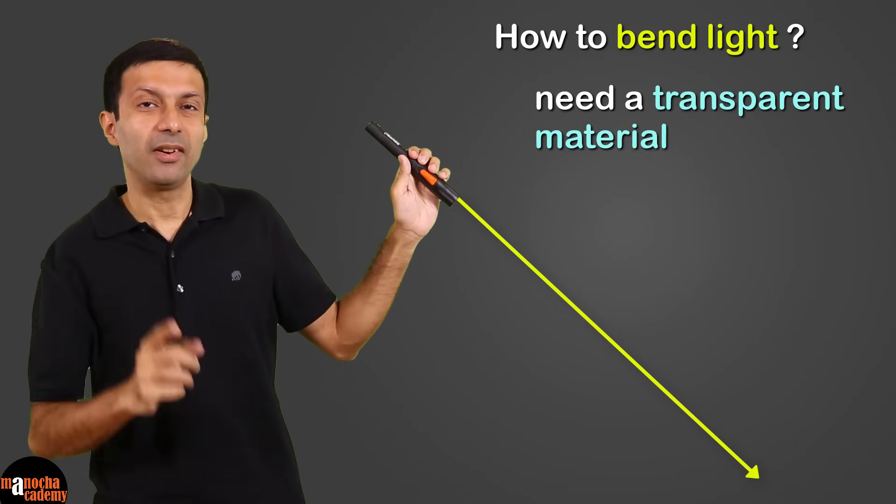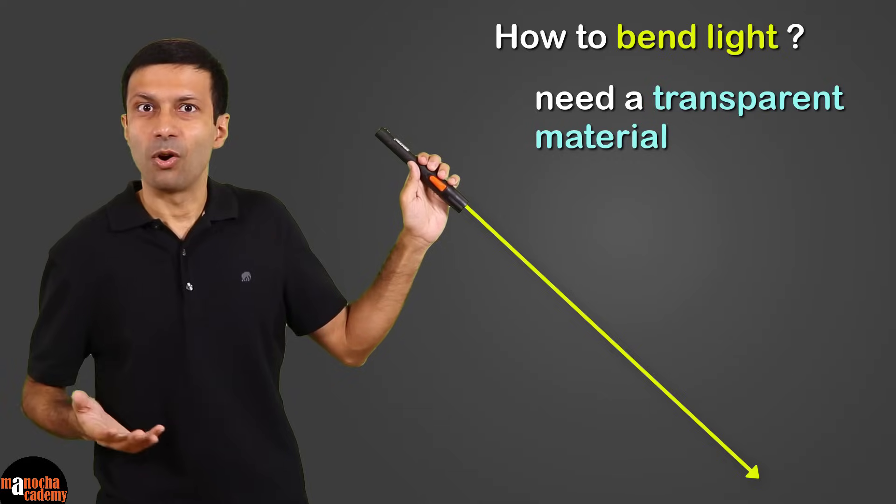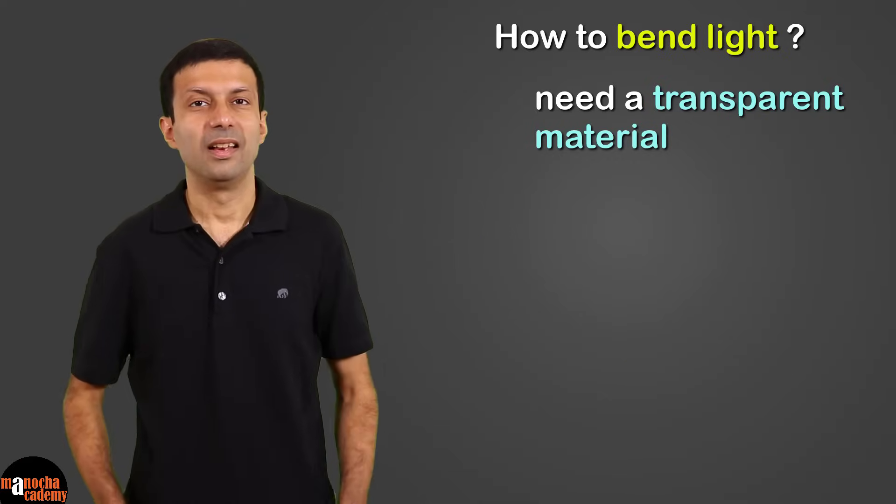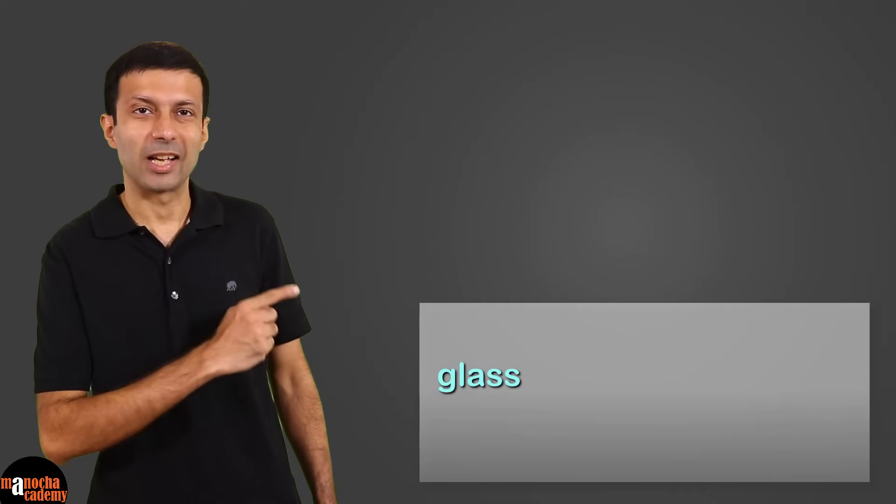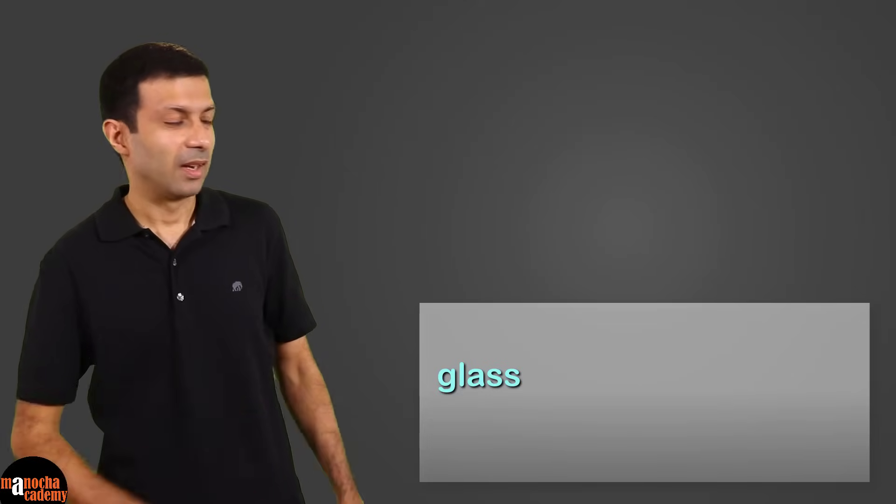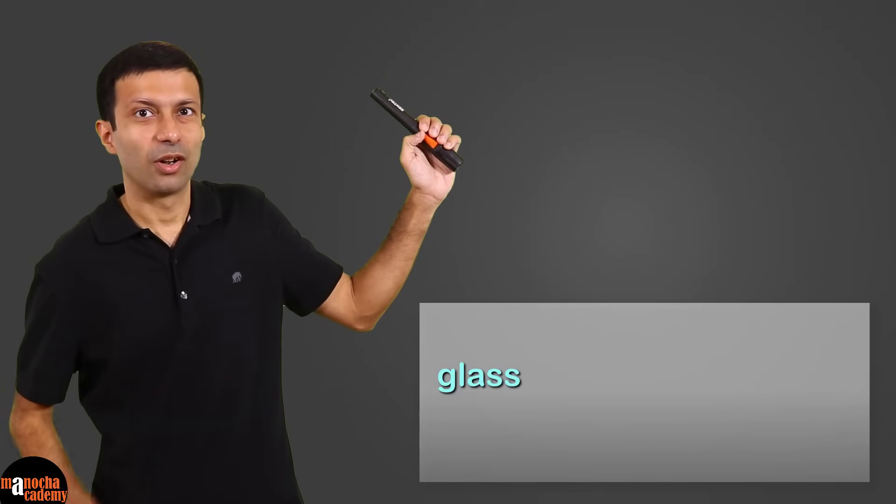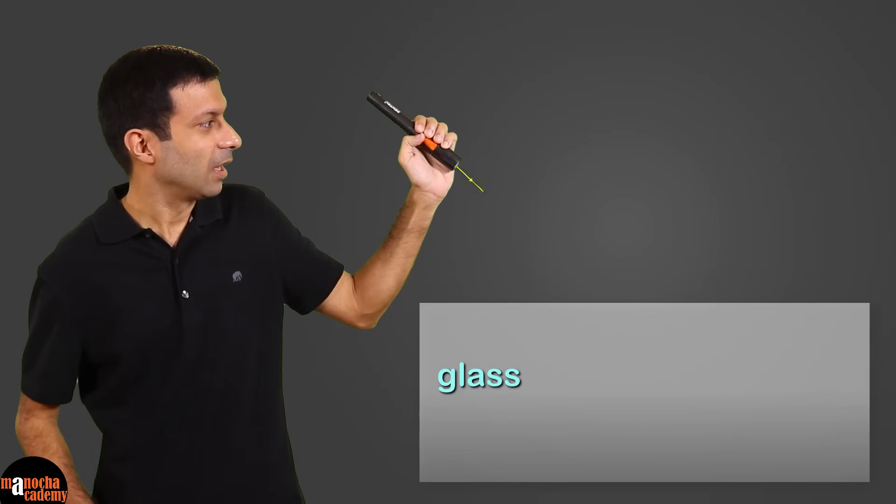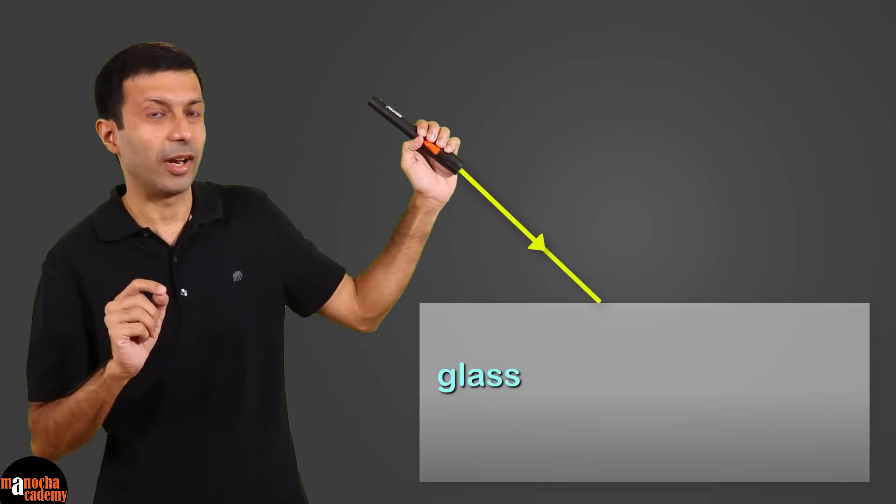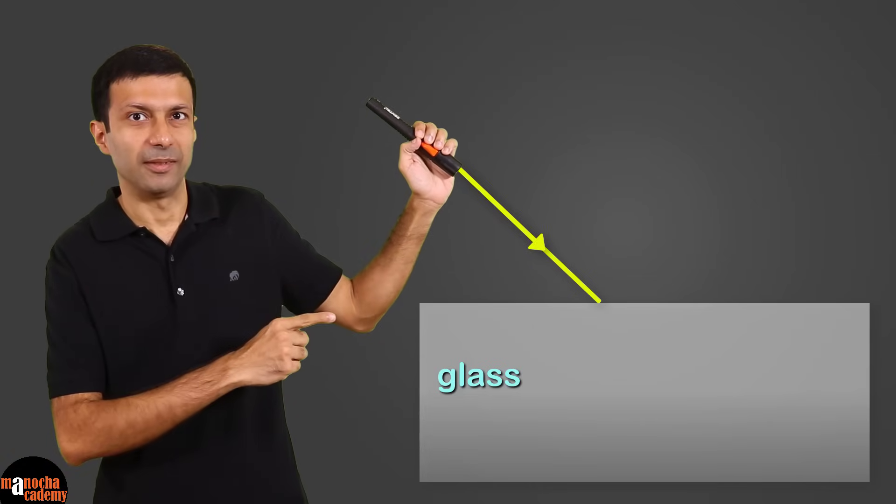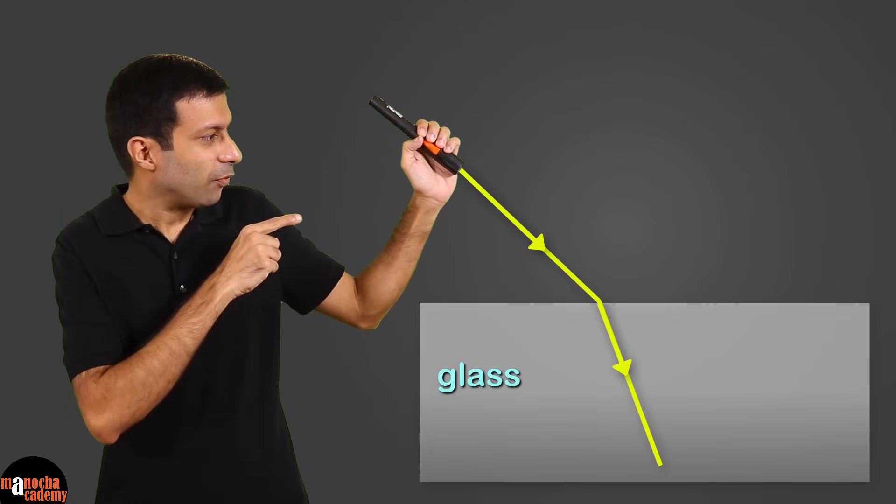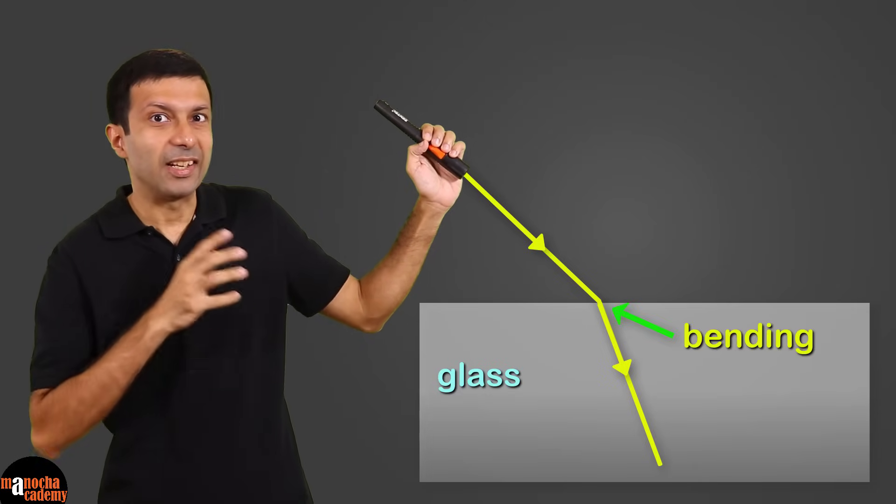You need a transparent material like glass or plastic here. Let's imagine there's a large glass block kept here. And I'm going to shine this torch on the glass block. Again we'll consider a single ray of light for simplicity. Can you see the ray of light bending as it enters the glass block?